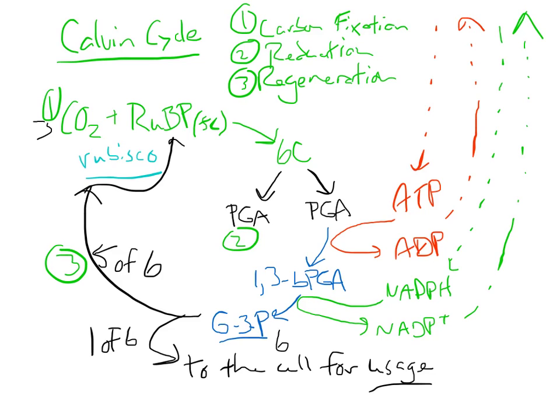Now, we're still missing one important thing here. Remember, in the overall reaction of photosynthesis, we have water as a reactant and oxygen as a product. And I haven't mentioned either one of those things yet. So let's take a look at where water is involved by going back to the light reactions and seeing the role that it plays.